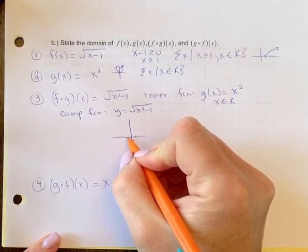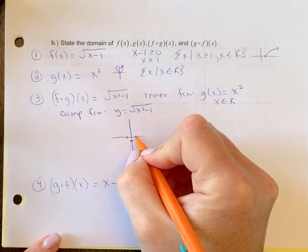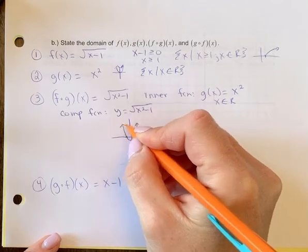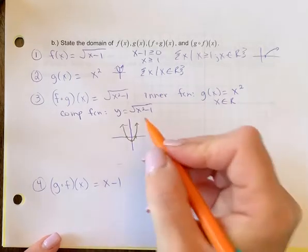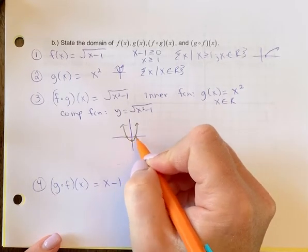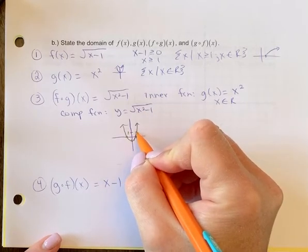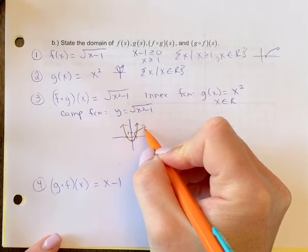So that would be a parabola shifted down 1. So you'd have this general shape right here, and then you would square root all the y values, keeping in mind anything below the x-axis would remain the same. Your invariant points of 1 would stay the same, so you would have this general shape here.